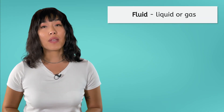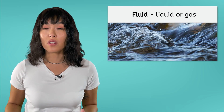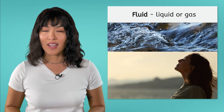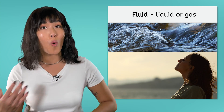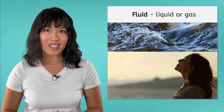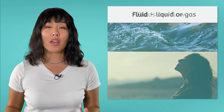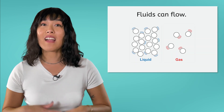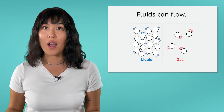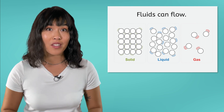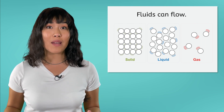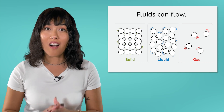What exactly is a fluid? A fluid can be a liquid, like the water in a river, or a gas, like the air we breathe. These two states of matter flow and adapt to the shape of their containers. It helps to remember that fluids can flow, meaning their atoms have more freedom to move around. Solids are not fluids, because the rigid structure of their atoms forces them to hold a constant shape.